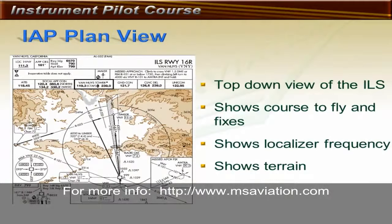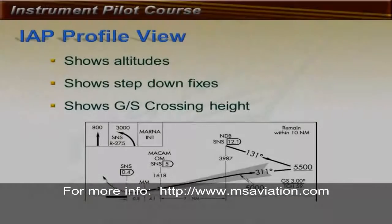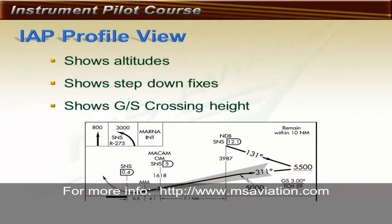Here is the plan view of an instrument approach procedure. The plan view of an ILS shows the course to be flown, fixes along the ILS, the localizer frequency, and a depiction of the terrain with obstructions. The profile view shows altitudes to fly when established on each segment of the approach, as well as step-down fixes along the way if there are any.